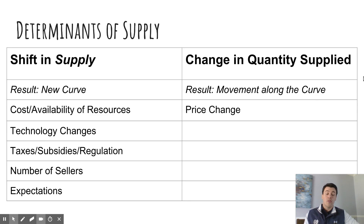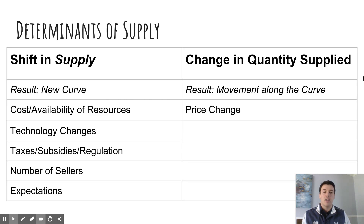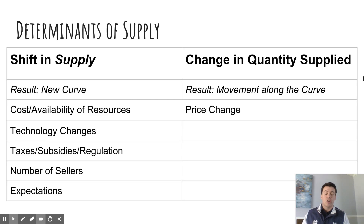Super quick overview of that right there. We'll do more stuff in class with this as well. I'm assuming that the demand background is already going to help us understand this better. This is just the overview of supply, the determinants, and how all of that works.